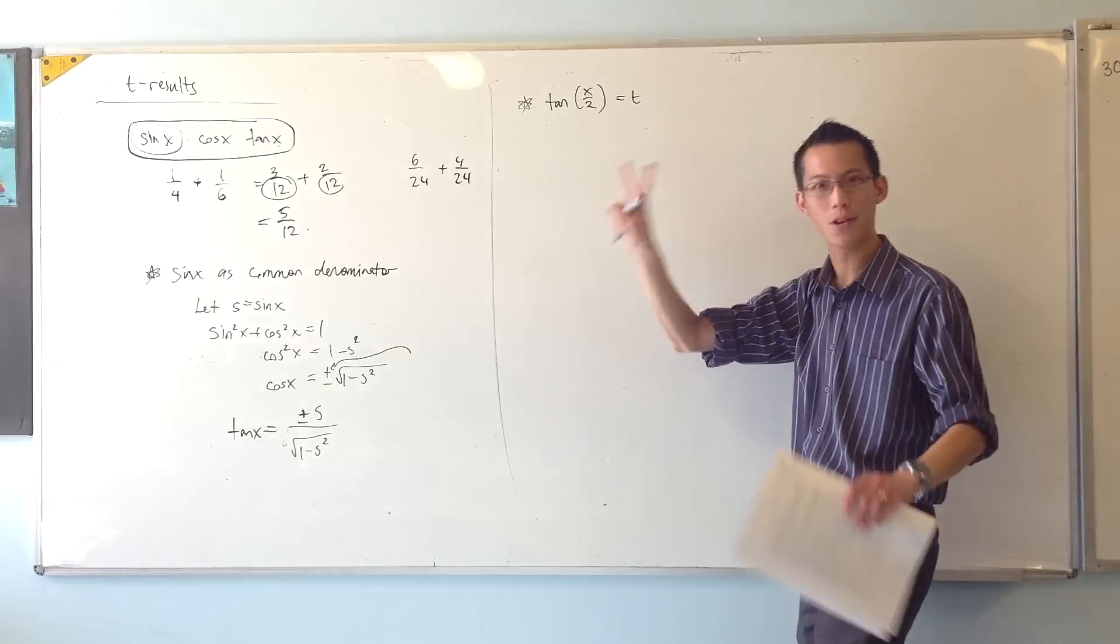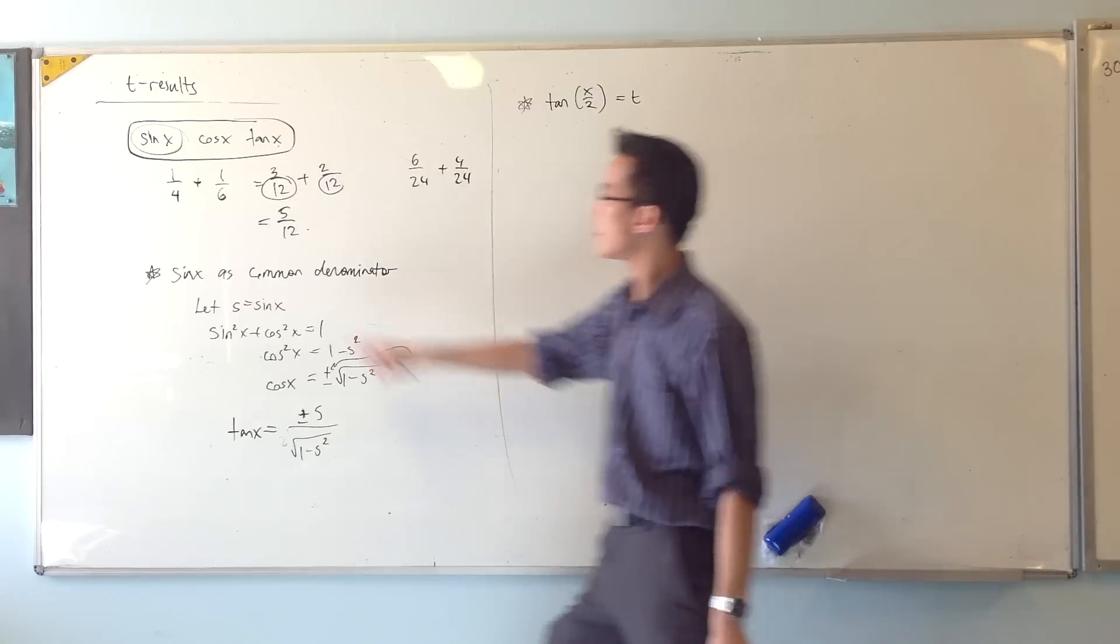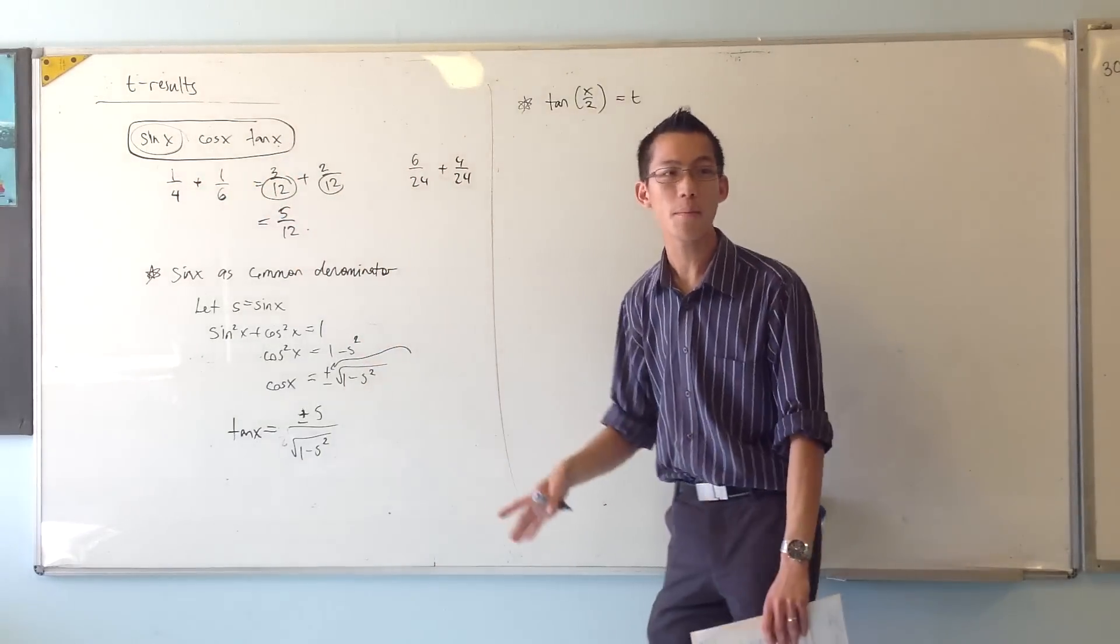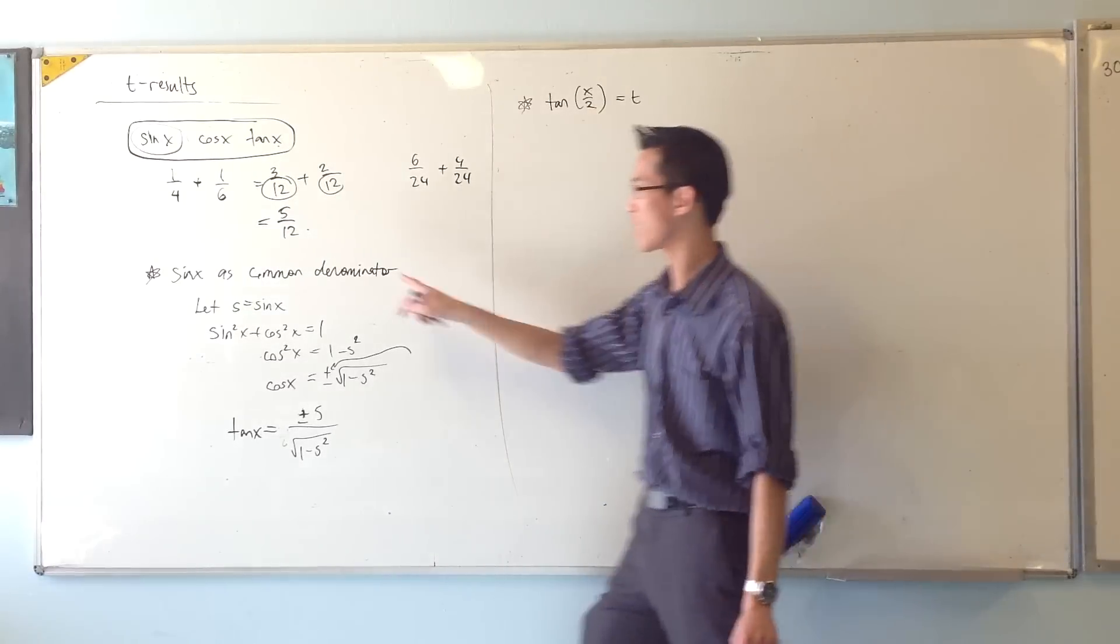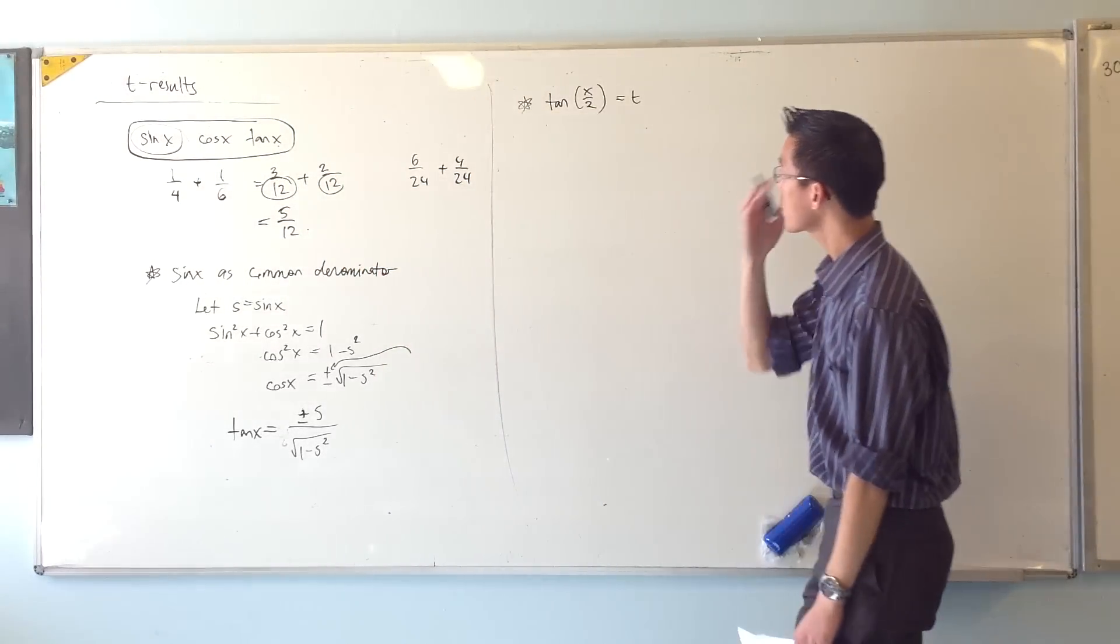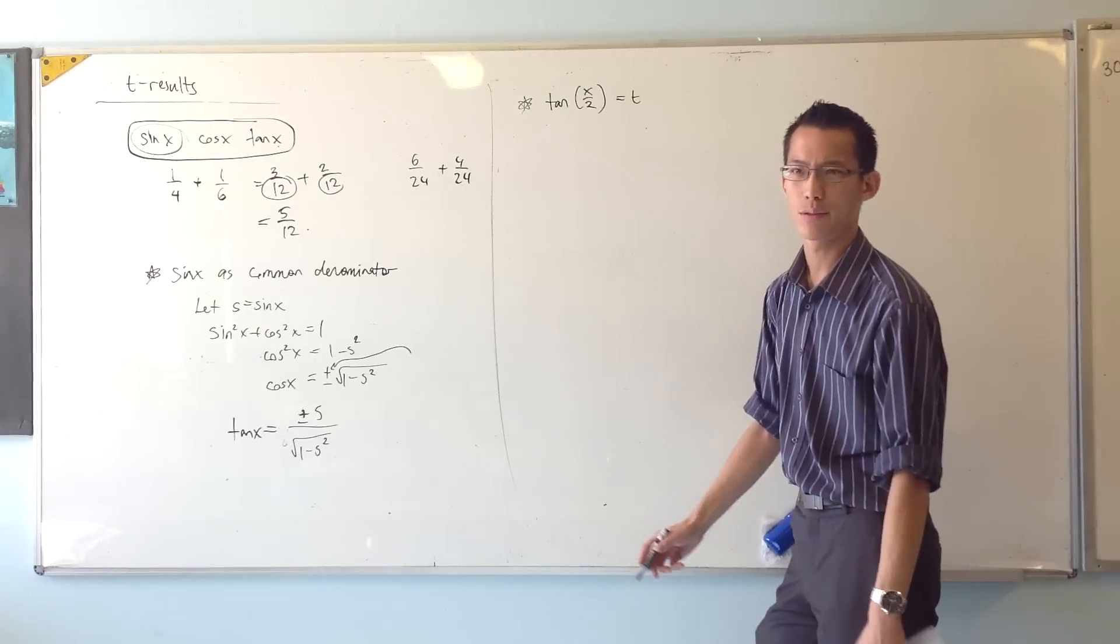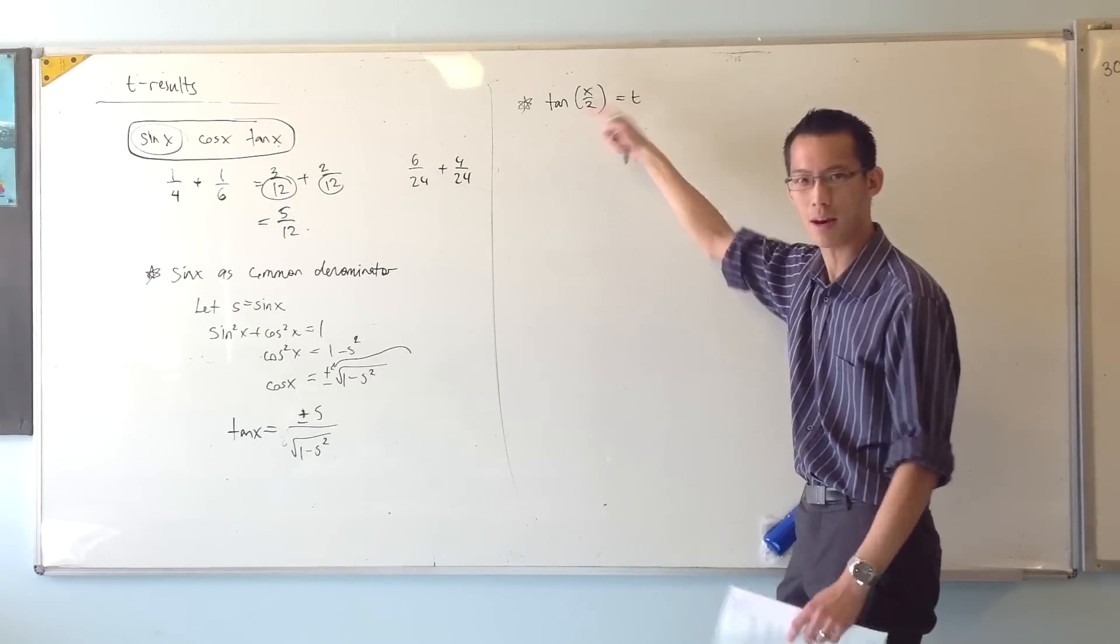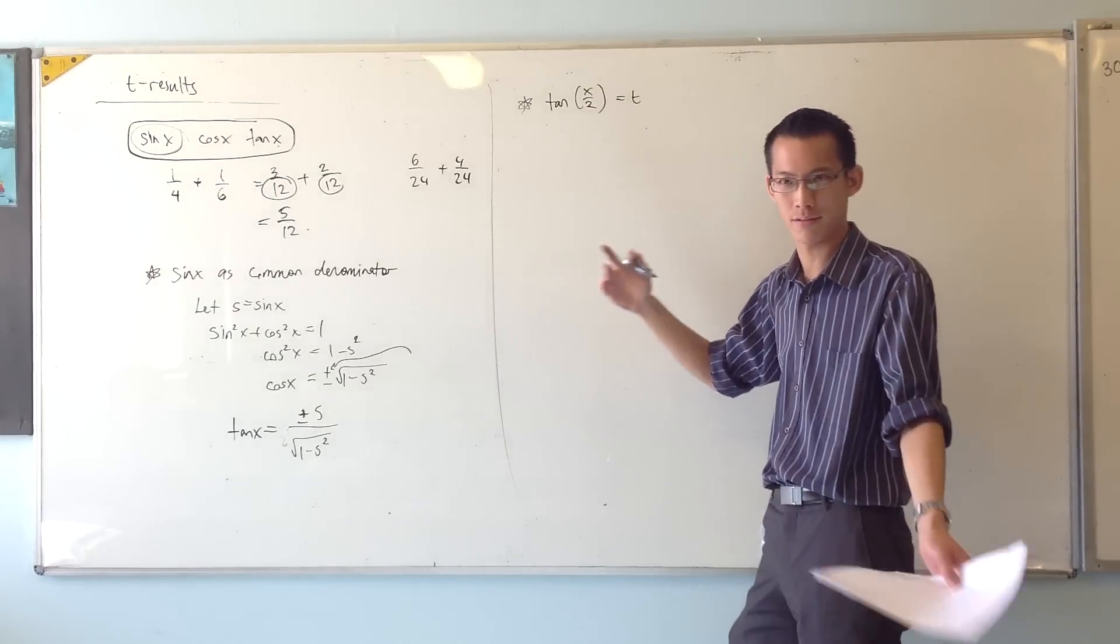This is what we're going to go with. This is the common denominator we're going to try and get. I want sine, cos, and tan all in terms of this, just like I got all my fractions in terms of this. Because half angle and double angle are really the same thing just wearing different clothes.